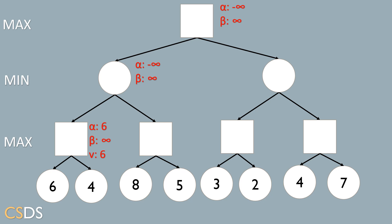We check if alpha is greater than or equal to beta. Since no value is greater than or equal to infinity, we will not prune yet and continue to the right node of the same subtree. Because the parent is a max node and six is greater than four, v and alpha are not updated; alpha remains six. V is passed up to the parent minimum node, giving v equal to six. Since we are at a minimum node, we update beta to the minimum of infinity and six, so the new beta value is six.